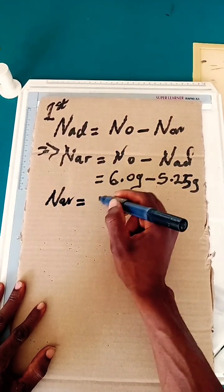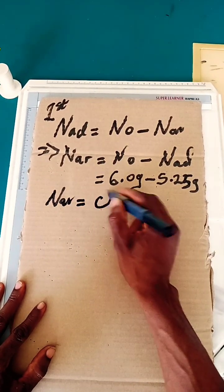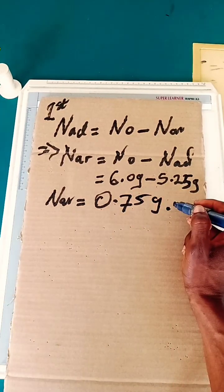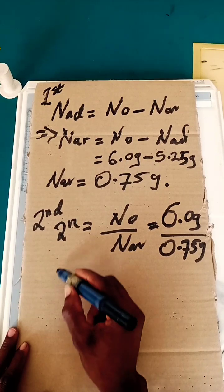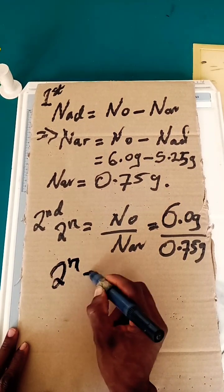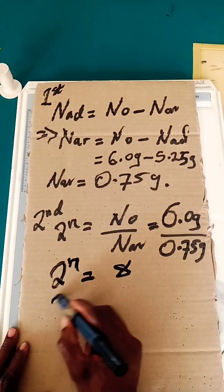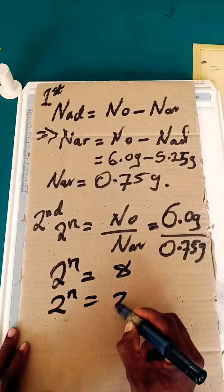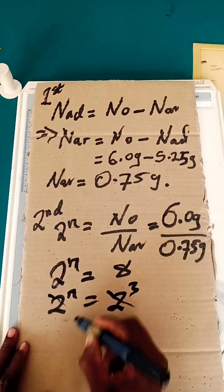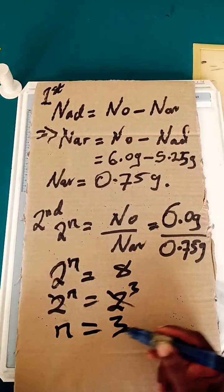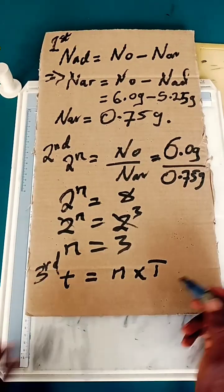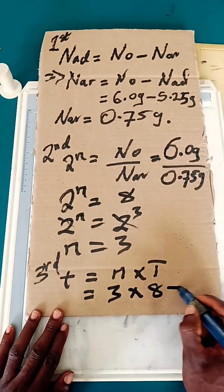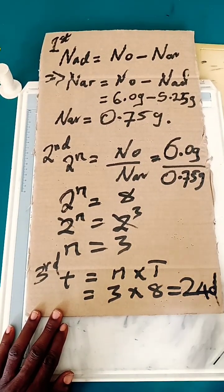The number of atoms remaining is 0.75 grams, and the decay ratio is 8. So 2 to the power n equals 8, which is 2 to the power 3, giving us n equals 3. Therefore, t equals 3 times 8, which gives us 24 days.